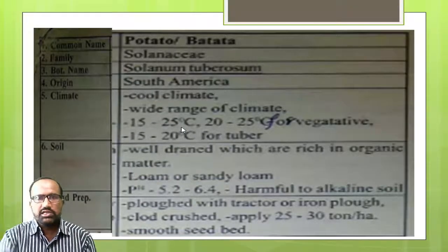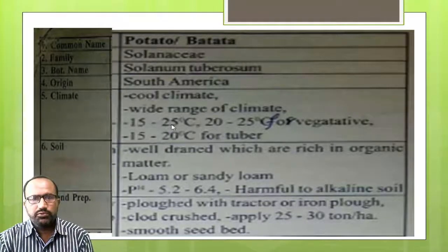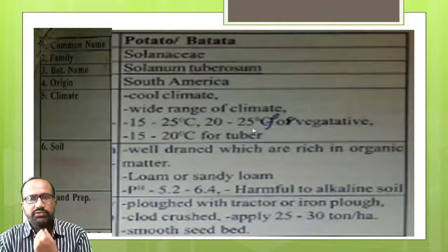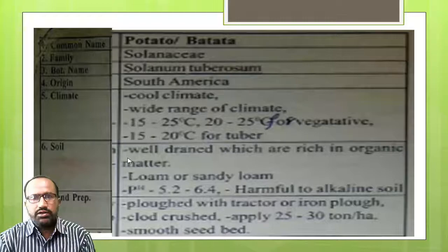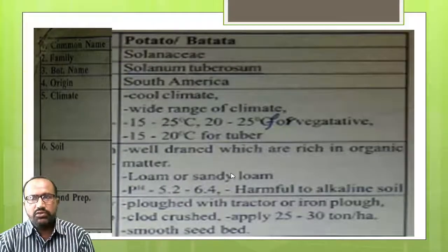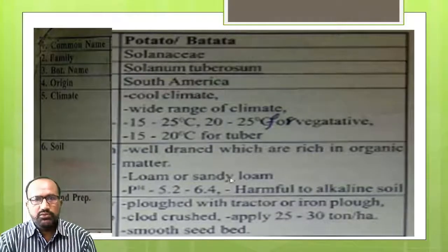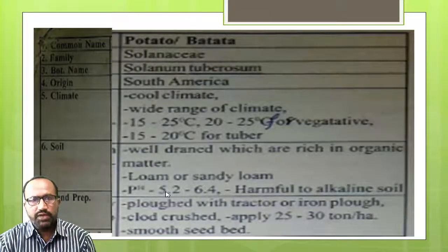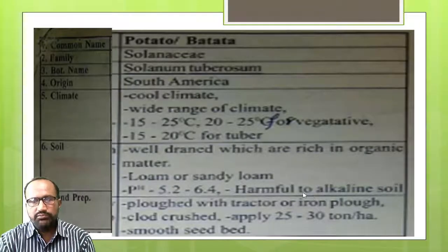Soil: it requires well-drained soil with rich organic content. Rich organic matter content is good for germination. Loam or sandy loam soils are most suitable. Sandy loam soil is suitable for potato cultivation. Soil pH: 5.2 to 6.4. Potato crop is harmful in alkaline soil; neutral soil is preferred.